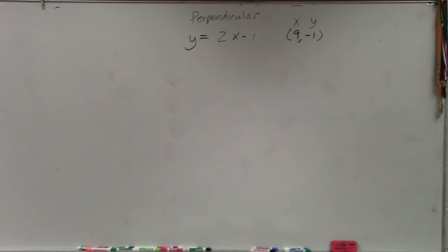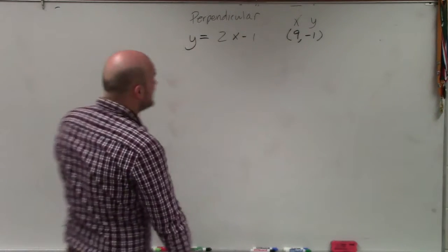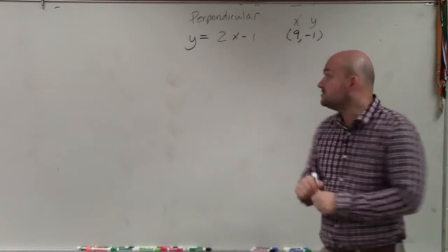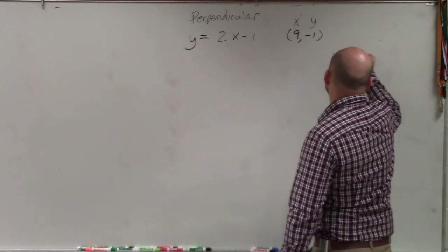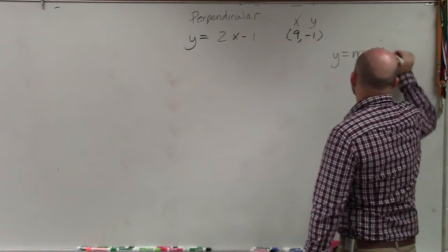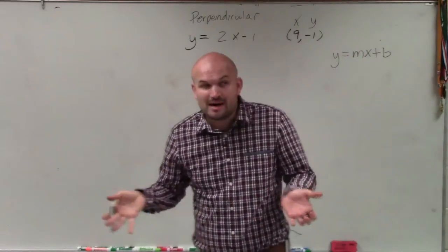The only difference here now is when we need to write the equation of the line, but now it has to be perpendicular to it. If we still want to write the equation in slope-intercept form, y equals mx plus b, we still need to identify what the slope is and what the y-intercept is.